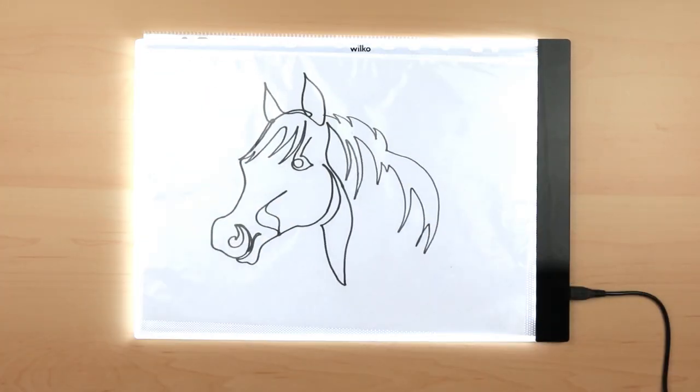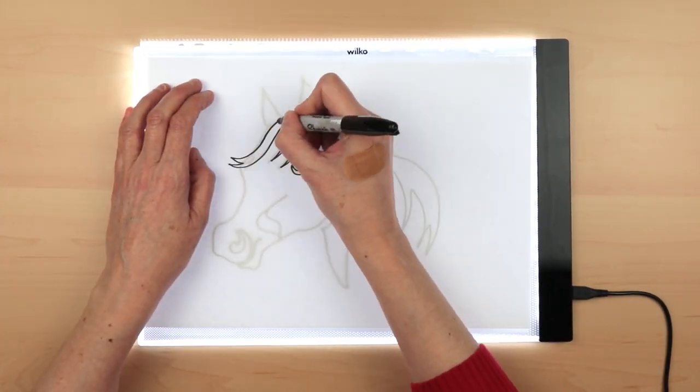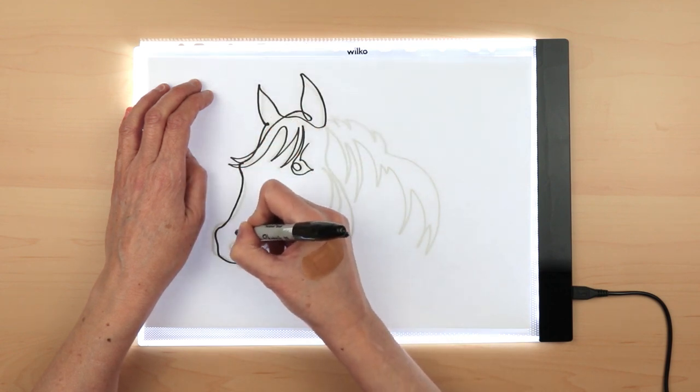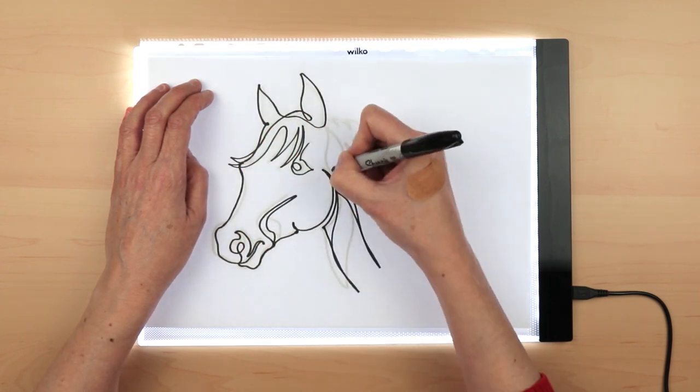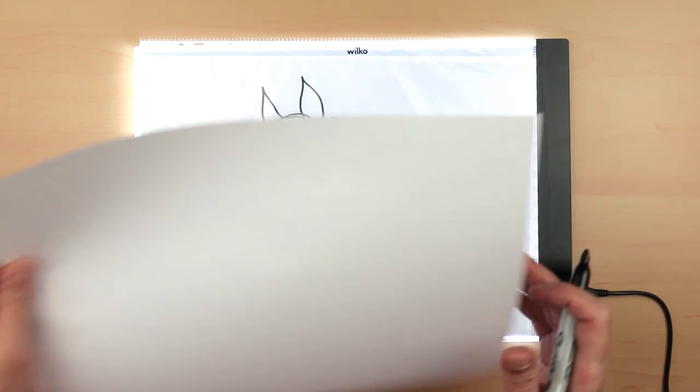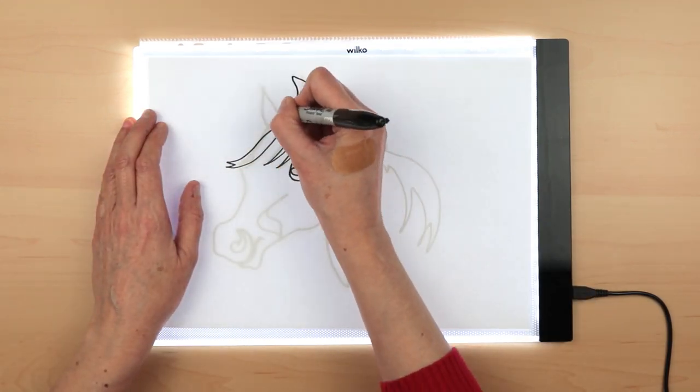So are you just making subtle changes now until you're happy with it? Yeah, basically each time I do it I tweak it. Actually sometimes it makes it worse, but I'm trying out different things, seeing if I can simplify the line work a bit.